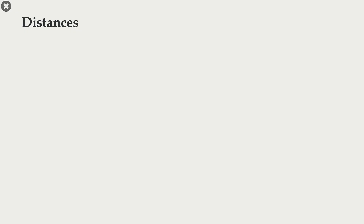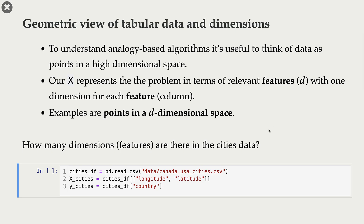Our goal is to come up with some way to find similarity or distance between two examples so that we can find nearest neighbors of a given example. To understand analogy-based algorithms, it's useful to think of data as points in a high-dimensional space. Given x, each feature in your x is a dimension, and each example is a point in this d-dimensional space.